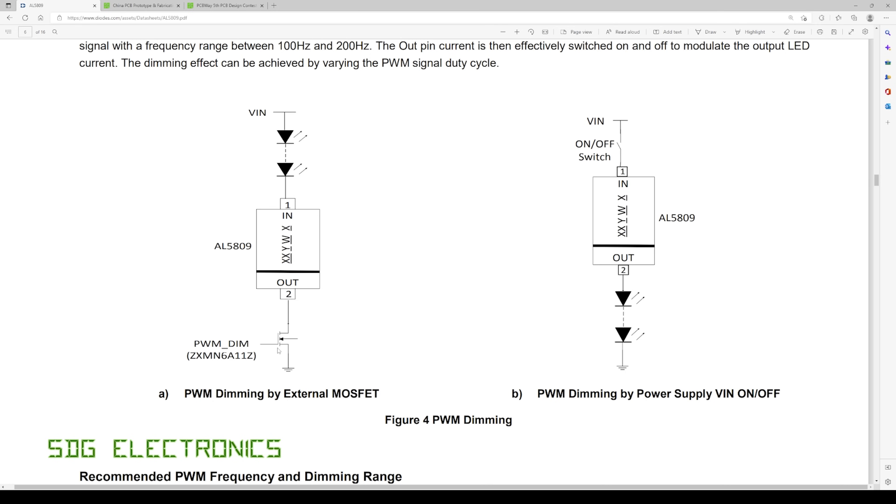Now there's nothing that we can actually damage in the AL5809 there's no capacitors or anything it's all passive so when the power gets shut off the LEDs will just turn off and when it turns on there's probably a slight delay before it's regulating but we shouldn't really have any issues with any kind of damage.